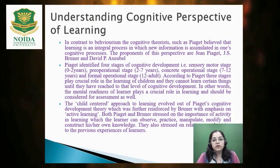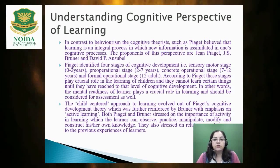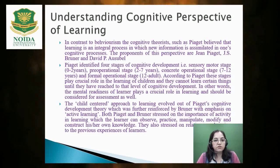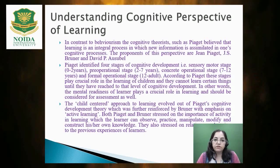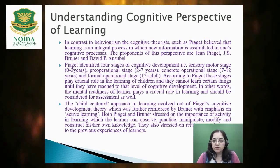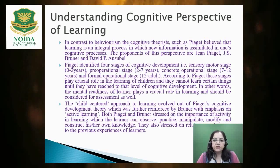As you all know, there are four stages in Piaget's cognitive development theory. The first stage is the sensory-motor stage, from 0 to 2 years. Second is the pre-operational stage, 2 to 7 years. Then the concrete operational stage, 7 to 12 years. And the formal operational stage, which starts from 12 years and continues to adulthood.